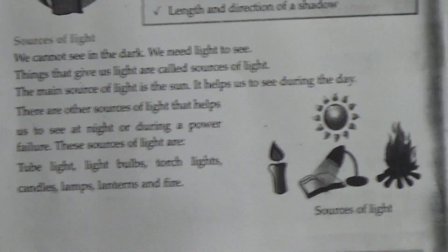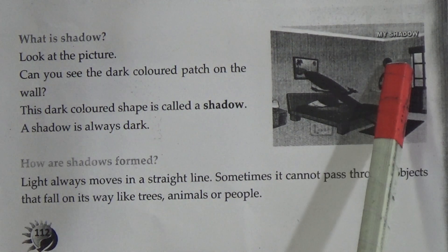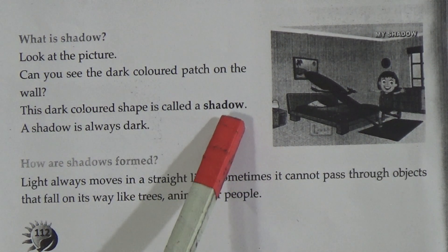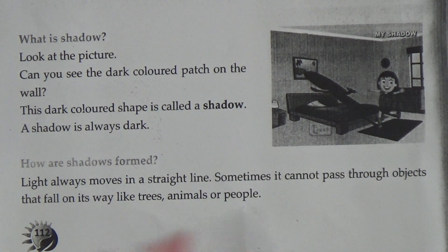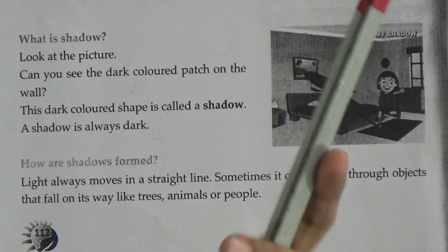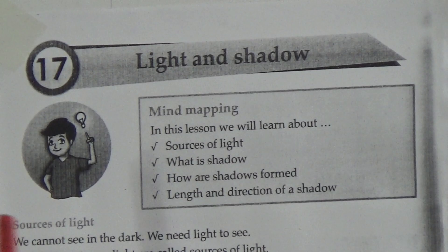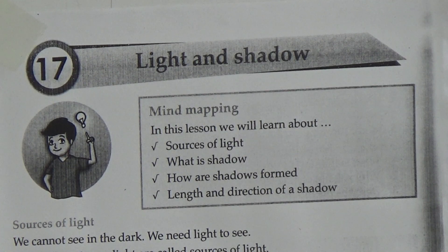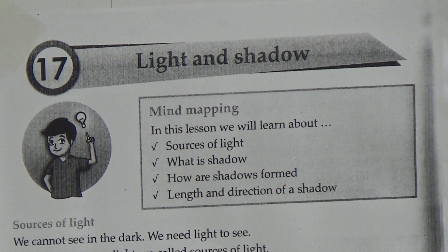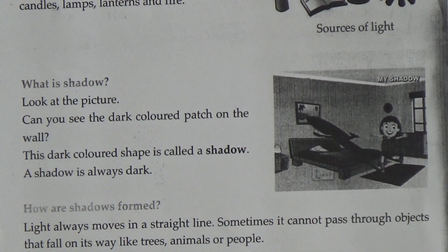What is shadow? Look at the picture. Can you see the dark color patch on the wall? This dark color shape is called a shadow. You can see here — this is my stick, and here is a black stick shape. It is called shadow. Here is my hand, and you can see my hand figure in this blackboard. It is dark, and this is called shadow. This dark color shape is called shadow. A shadow is always dark.